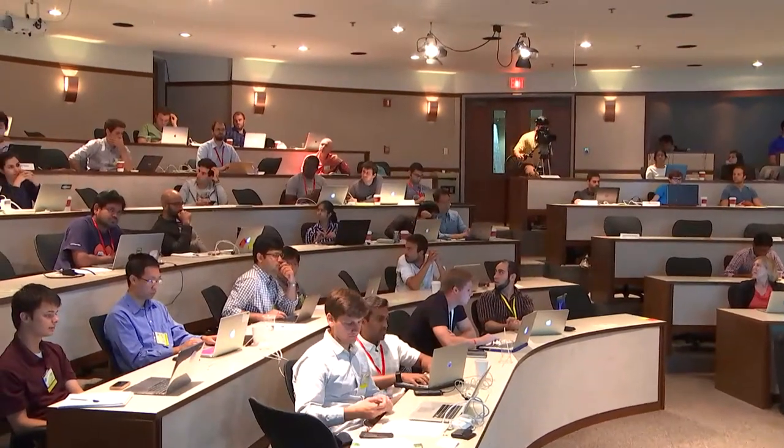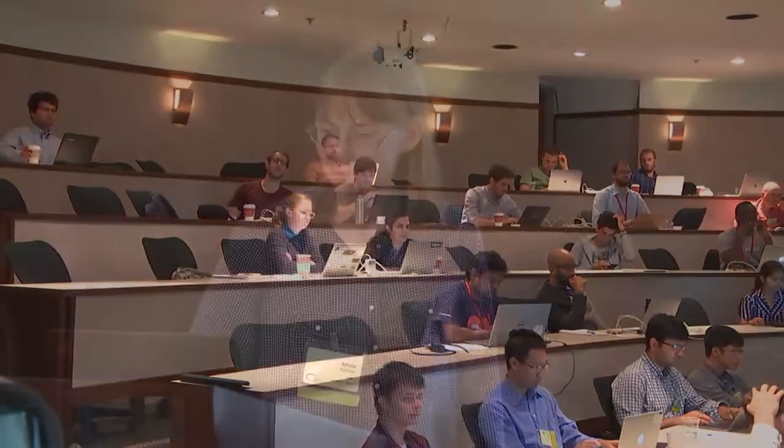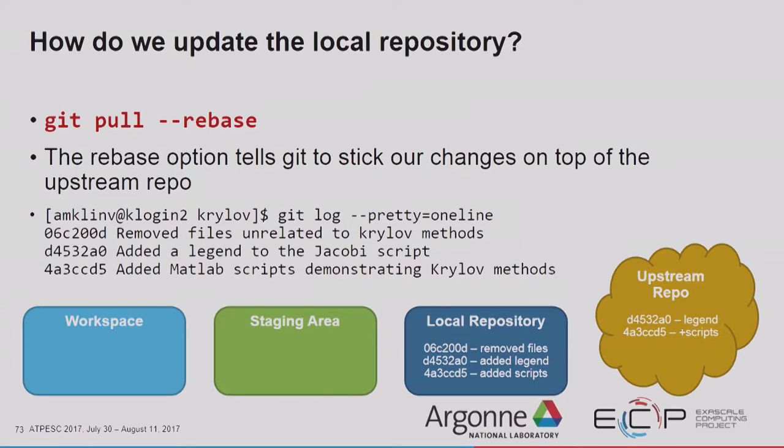Isn't the rebase option problematic when working with many people and you're a few commits behind the upstream repo — aren't you rewriting history? `Git pull --rebase` is different from `git rebase`. It changes my local history — my removal commit gets a different hash because it's slightly different, but the shared commits are the same. It didn't change shared history. There is a big debate as to whether rebase or merge is better, and I'm not going to get into that.